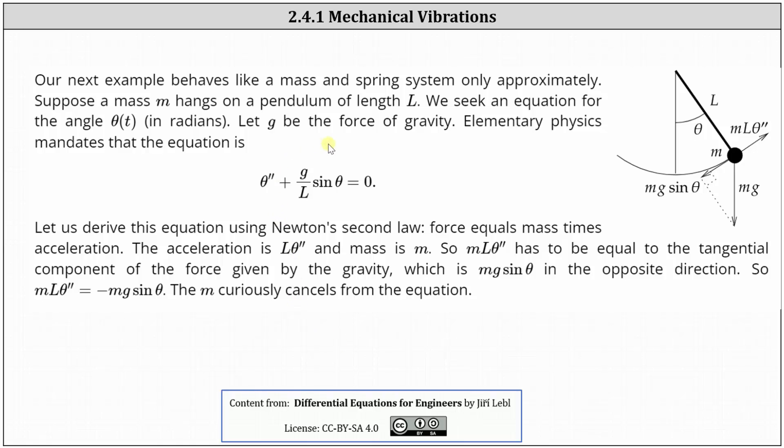Our next example behaves like a mass and spring system, but only approximately. Suppose a mass m hangs on a pendulum of length L, as shown here on the right. We seek an equation for the angle theta(t) in radians. Let g be the force of gravity. Elementary physics mandates that the equation is theta'' + (g/L)sin(theta) = 0.